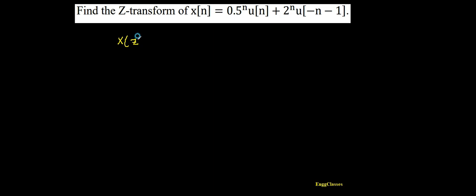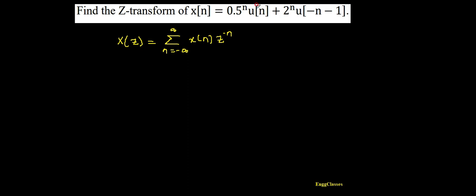I should know the formula of the Z-transform, which is represented as X(z) equal to summation from n equal to minus infinity till infinity of x(n) times z to the power minus n. So this is the formula of X(z). There are two terms, so I can apply that.